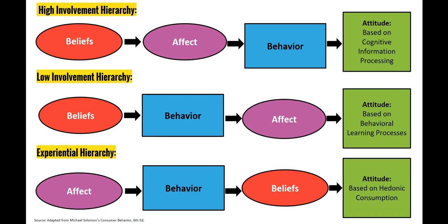Then there's the experiential hierarchy. That starts with affect — with our emotions. We have an emotional need or emotional attitude towards a particular product. For instance, maybe we really long for a Gucci handbag. That leads to the behavior of buying it, if we can afford it, and that solidifies our belief that it's a good kind of product to have. The attitude in that case is based on the principle of hedonic consumption — the idea that we should purchase things or have experiences in order to make ourselves happy.